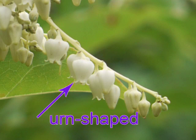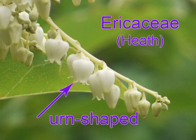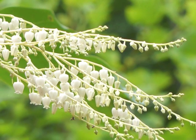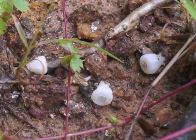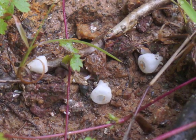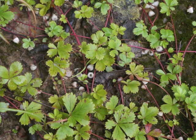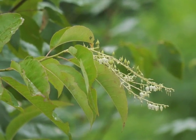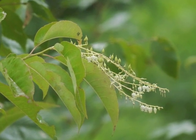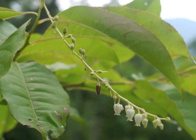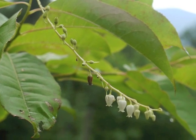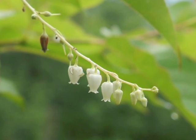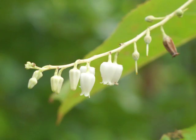The urn shape is typical of a member of the Ericaceae family — the heath family. After a flower blooms, it drops its urn-like covering; you can find these littering the ground beneath the sourwood tree. The white stems display flowers in various stages of development, with flowers closest to the tree blooming first.